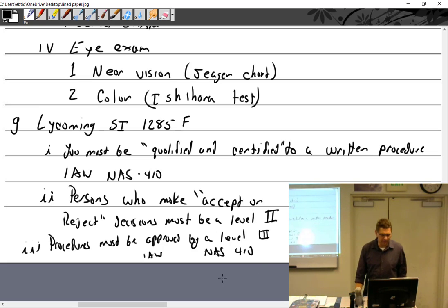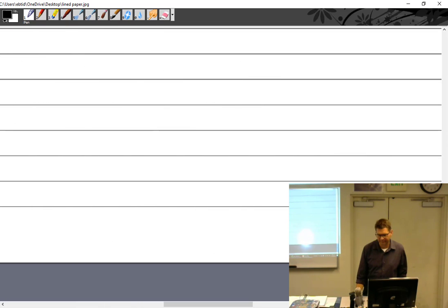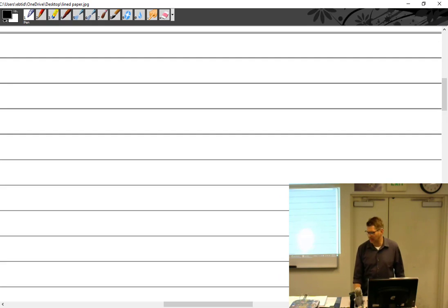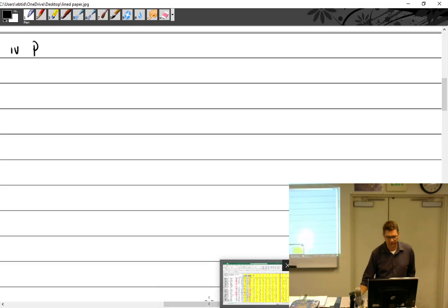Procedures. I think I can fit this in here. Procedures must be approved by a level, level what? Three. In accordance with, what do you think? NAS 410. So can my level three just make up some stuff? Yep. I'm good. Perfect. Pretty much. Well, let's make it work with what you've got. Kevin? Yeah. You've talked a lot about qualification stuff, but how does it actually fall into a regular day of work?